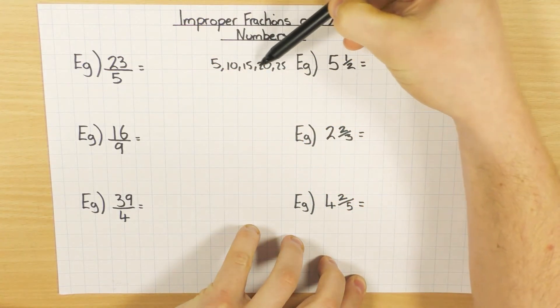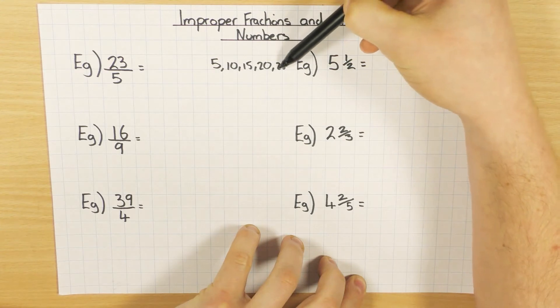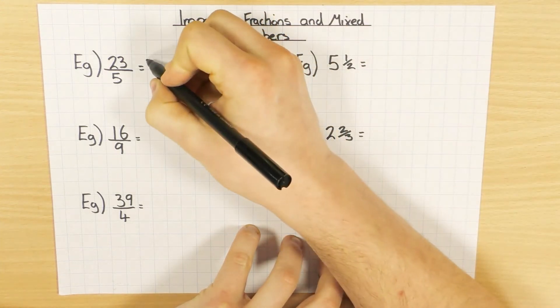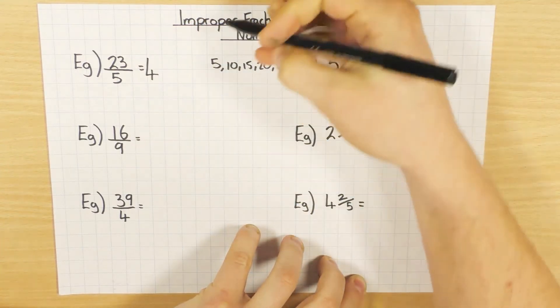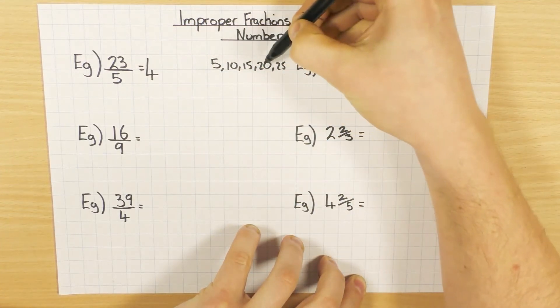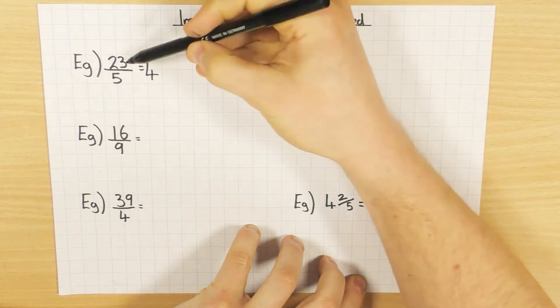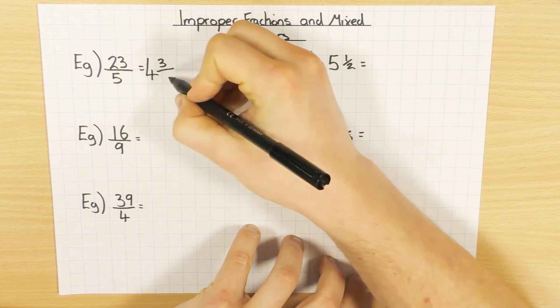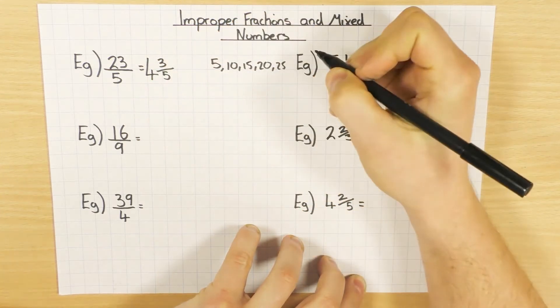And as you can see, it goes in 1, 2, 3, 4 times, but not 5, because obviously 25 is bigger than 23. So it goes in 4 whole times, but what's left over? Well if it goes in 4 times, I get to 20, I've got 23, so there's 3 left over, and your denominator stays the same as 5.